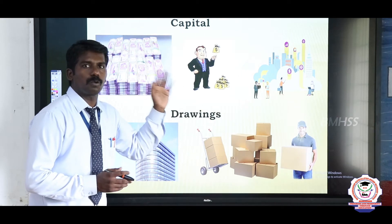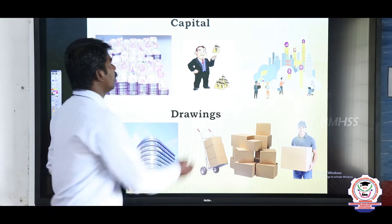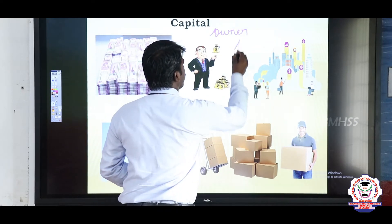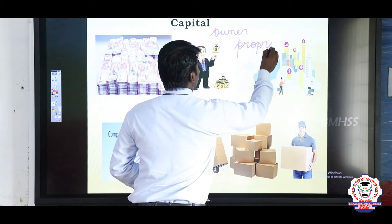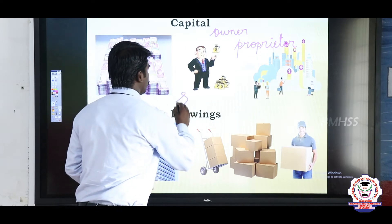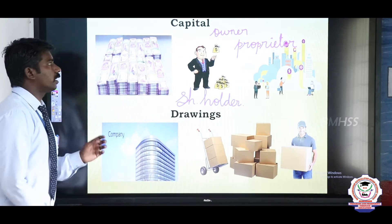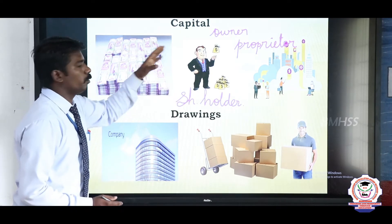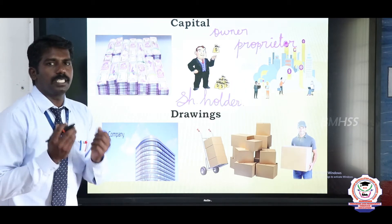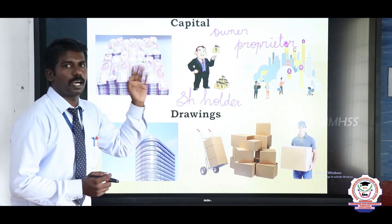Those persons are nothing but the proprietor, owner, or shareholders. The person who gives money to the business organization is called owner, otherwise proprietor, otherwise called shareholder, based on the type of business they undertake. Capital is the money which is needed to start a company, and the person who gives the money to the business organization is called owner, proprietor, or shareholder.